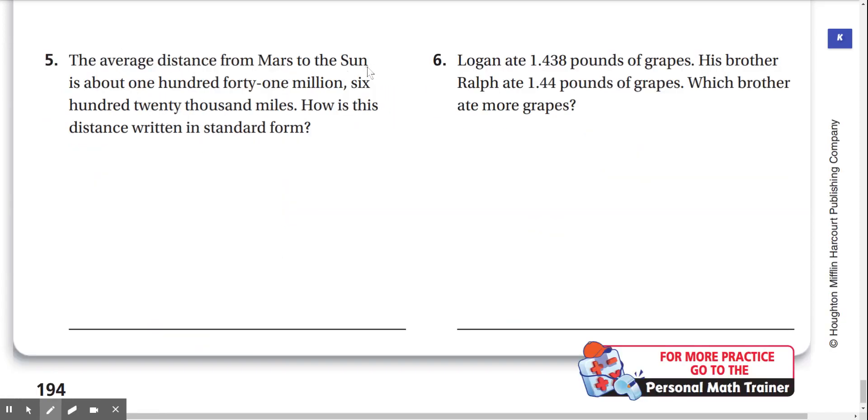Number 5. The average distance from Mars to the Sun is about 141,620,000 miles. How is this distance written in standard form? First, we've got to underline what we're looking at: 141,620,000 miles. So 141, let's write that. This is in the millions place: 141,000,000. Next is 620,000. And so this is in the thousands place. We're missing the hundreds, tens, and ones, so we're going to put zeros for those. And this is what our number looks like. This is in standard form: 141,620,000 miles.